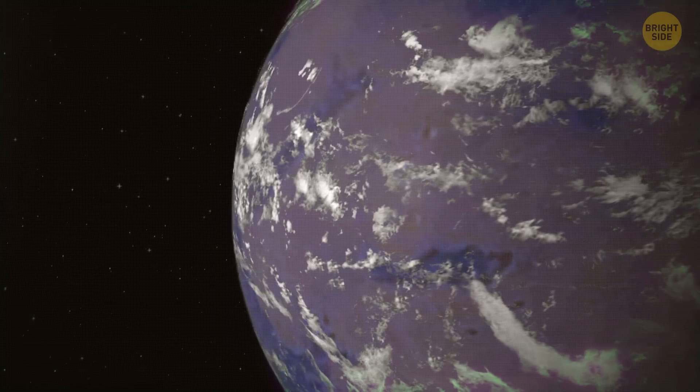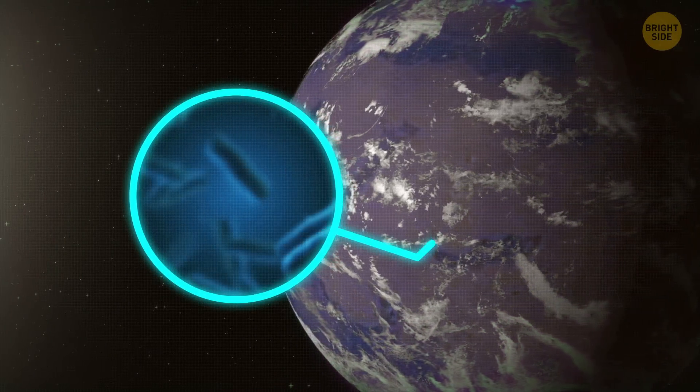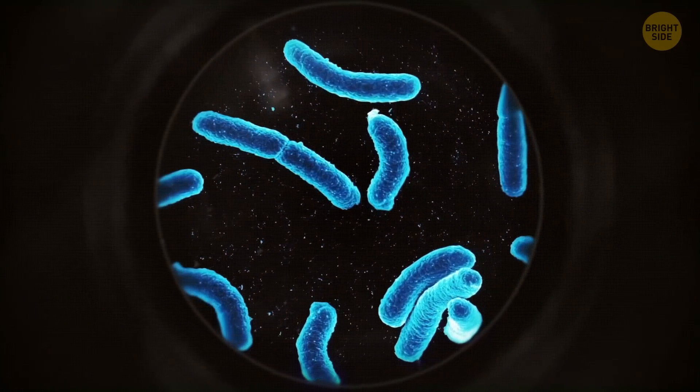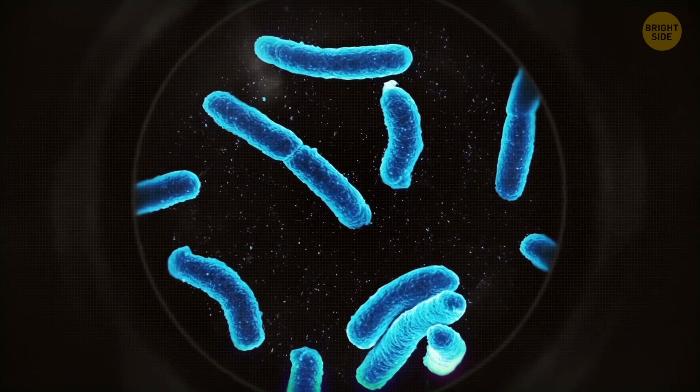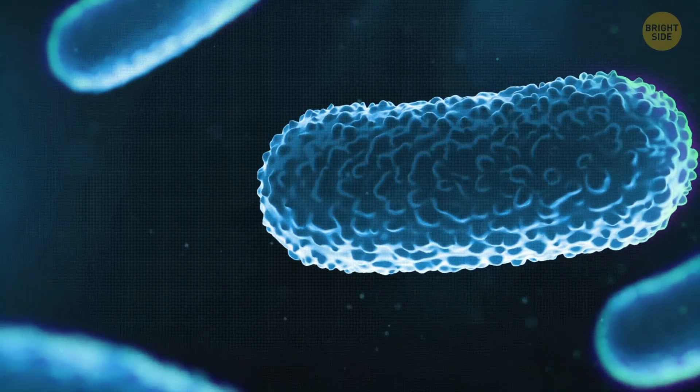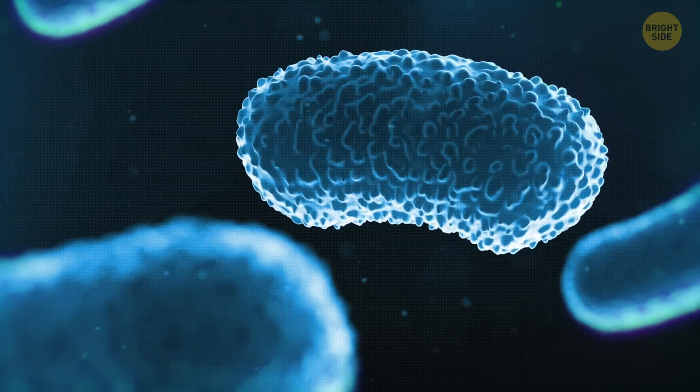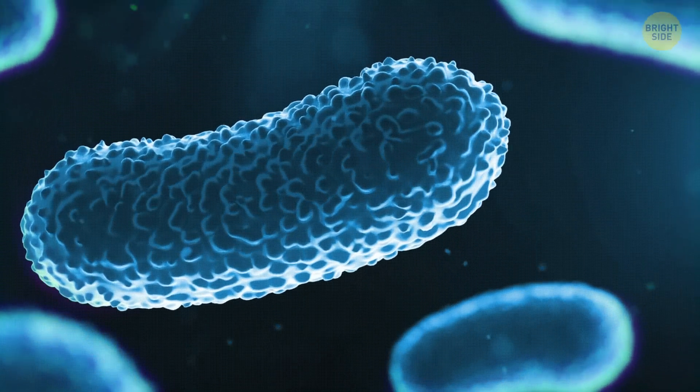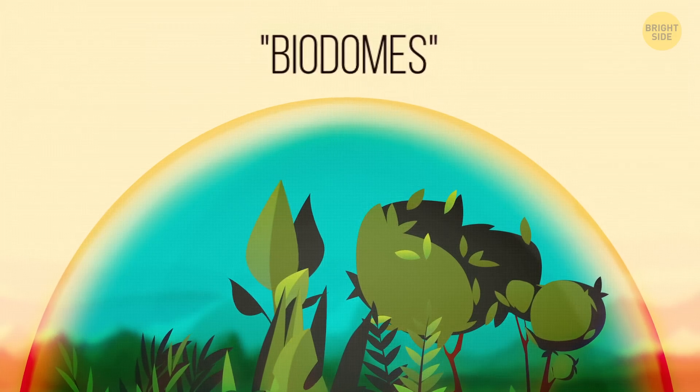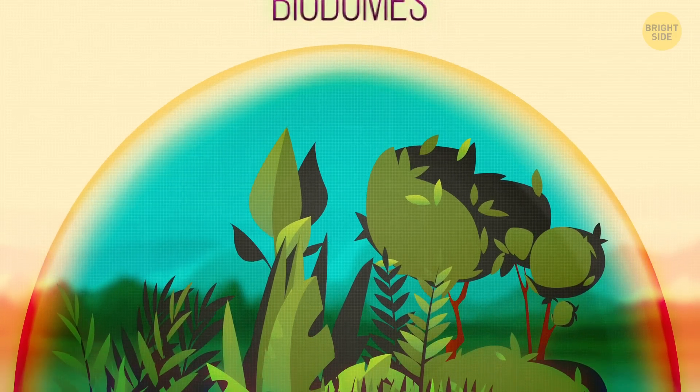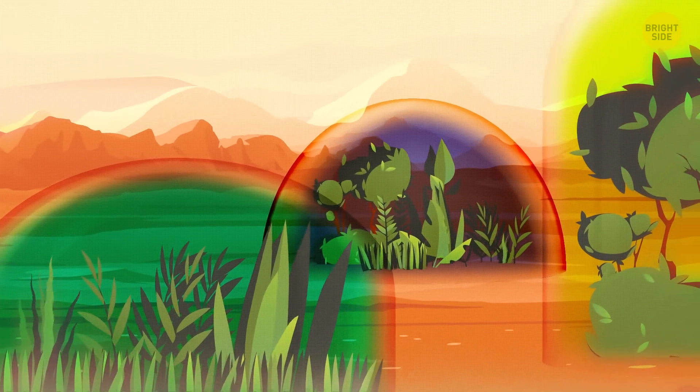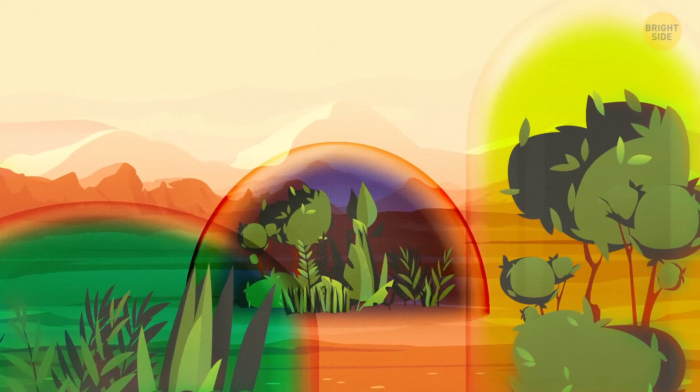The planet could also be populated with different bacteria. In laboratories on Earth, scientists have simulated conditions on the surface of Mars and realized many bacteria can survive there. As long as they live, they can release oxygen and other gases into the air. Besides that, we can build biodomes. This is a kind of greenhouse with favorable conditions. Life will develop in it, and the soil of Mars will gradually become suitable for life.